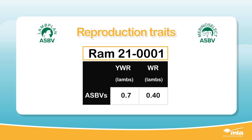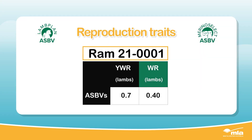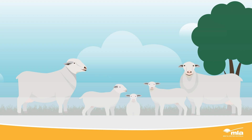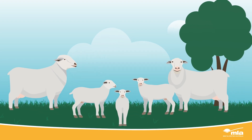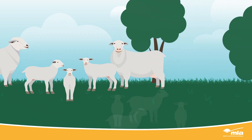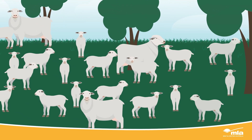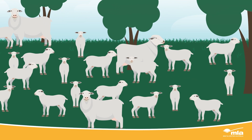By using ASBVs for reproduction traits in your ram selection decisions and retaining the ram's daughters to breed from, you can significantly improve your flock's performance and profits for many generations to come.